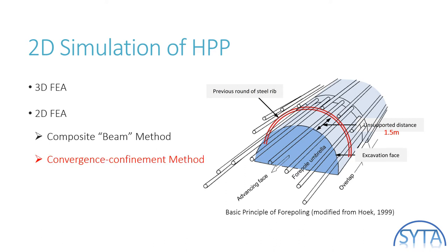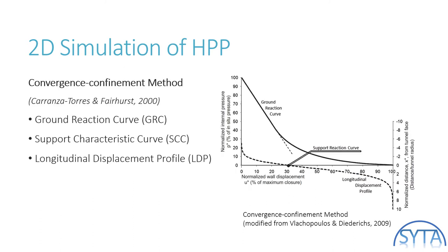Alternatively, to simulate the reinforced effect by horizontal pipe piles, I will investigate 2D modeling by borrowing the concept of the convergence confinement method. It is possible to control the ground movement degree by defining proper ground relaxation ratios for the horizontal pipe pile simulation. In order to adopt the convergence confinement method and obtain the ground relaxation ratio, three curves shall be plotted: the ground reaction curve, the support characteristic curve, and the longitudinal displacement profile. Since the structural properties of the shotcrete lining in 1-day and 28-day have been defined previously, the support characteristic curve can be formed accordingly.